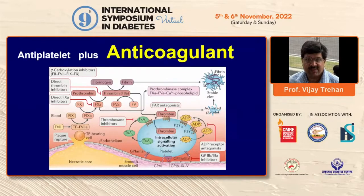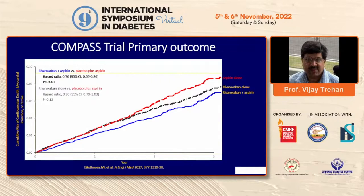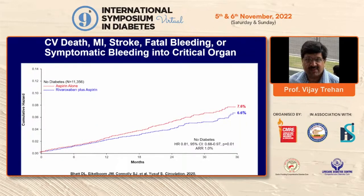A step further in handling thrombotic issues: in addition to antiplatelets, can we even add anticoagulants? The COMPASS trial has shown that adding low-dose newer anticoagulants in the form of rivaroxaban betters the effect obtained from aspirin alone. A combination of low-dose rivaroxaban and aspirin gives the best results. These results are far more marked in diabetics than in non-diabetics.